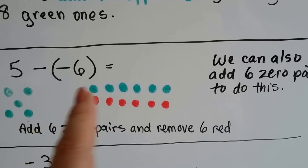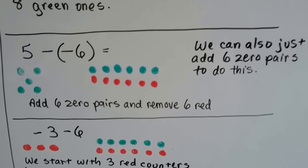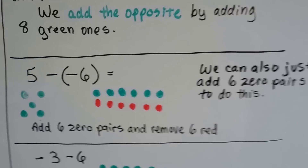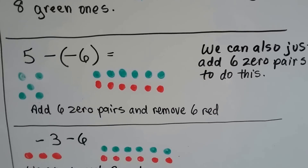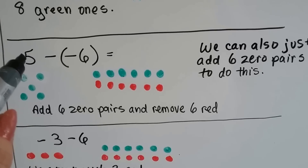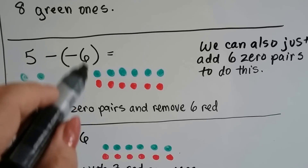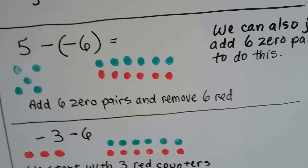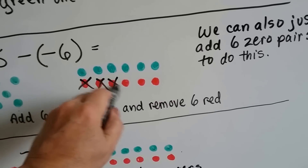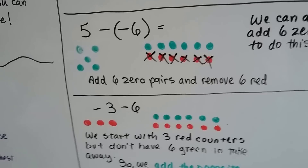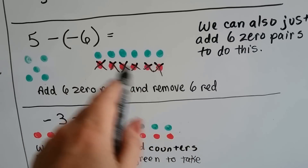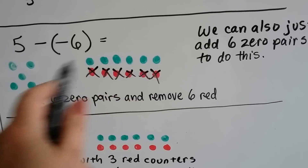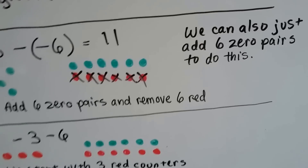How can we do this if we want to use green and red counters? We can also do this by adding zero pairs. So you can either just add the opposite and add the green counters, or you can actually add zero pairs. If you start with five green ones and you need to take away six red ones, what you can do is add six zero pairs and then take away the six red ones. That leaves us with five and six green ones — eleven positive green counters.